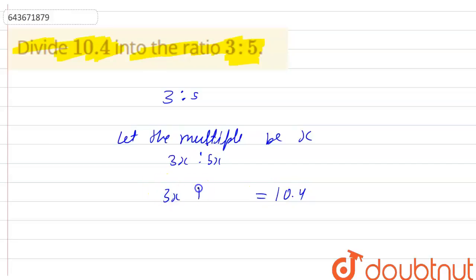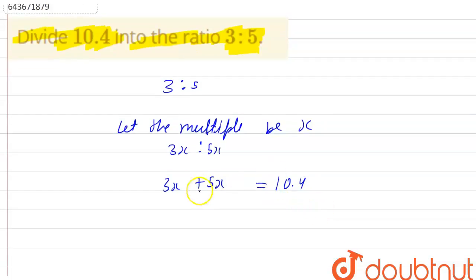10.4 will be 3x plus 5x because we are dividing into the same and the total sum will be 10.4. Now 3x plus 5x will be 8x. 8x will be 10.4, so x will be equal to 10.4 divided by 8.